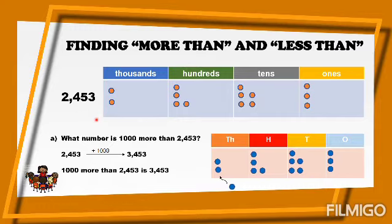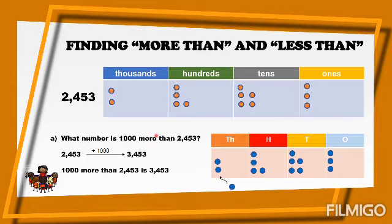The question here on this place value chart is: what number is one thousand more than two thousand four hundred fifty-three? I want to remind you that the key term is 'more than.' When we say more, this means plus. So again, when you see 'more,' that means plus.